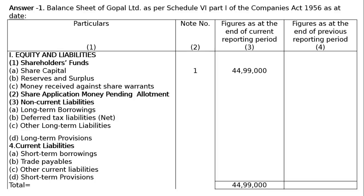In this question, it is written that disclosure of share capital in a company's balance sheet. Gopal Limited was registered with an authorized capital of Rs 50 lakh divided into equity shares of Rs 10 each. The company offered for public subscription all the shares. Public applied for 4,500,000 shares and allotment was made to all the applicants. All the calls were made and were duly received except the final call of Rs 2 per share on 500 shares. Prepare the balance sheet of the company showing the different types of share capital.